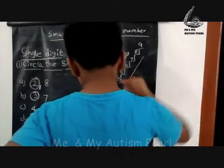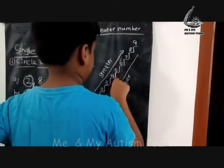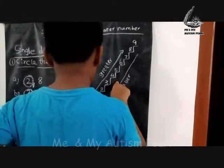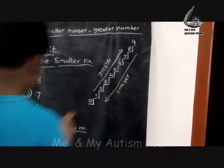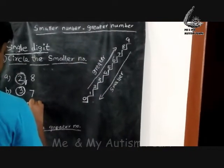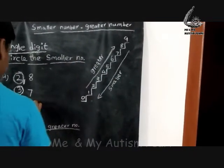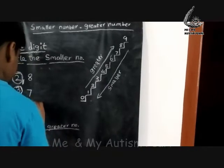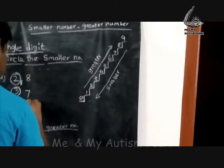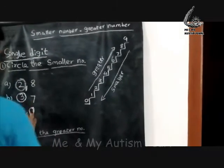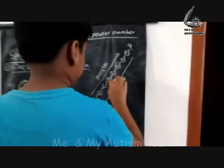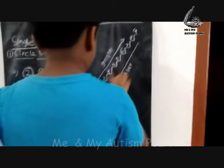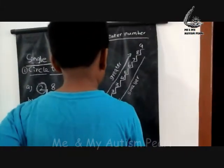1 is down, 4 is up. So the smaller number is 1. Next: 4 is up and 0 is down, so the smaller number is 0.